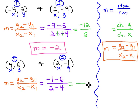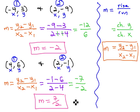Negative 1 minus 6 is negative 7, and 2 minus 4 is negative 2. We can reduce that fraction to find our slope. A negative divided by a negative is a positive 7 halves. The slope between these two points is 7 halves.